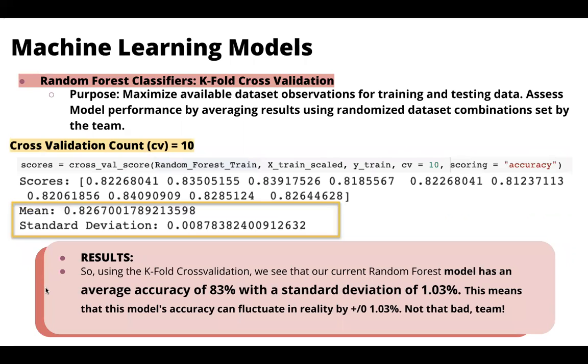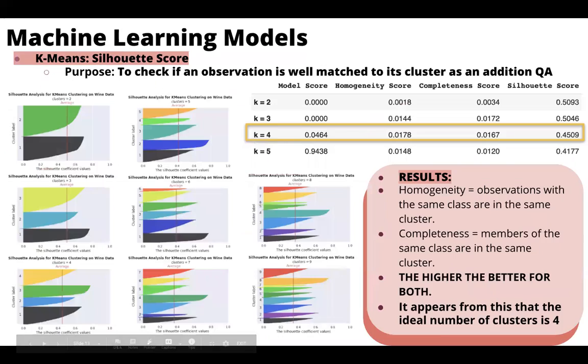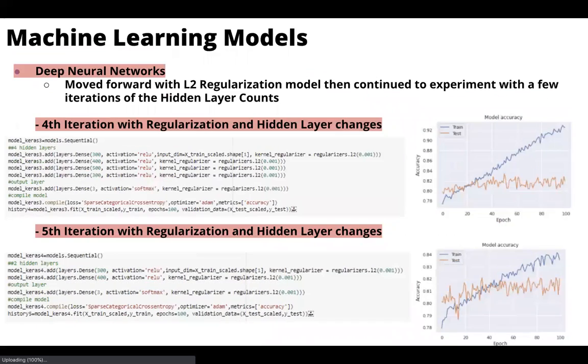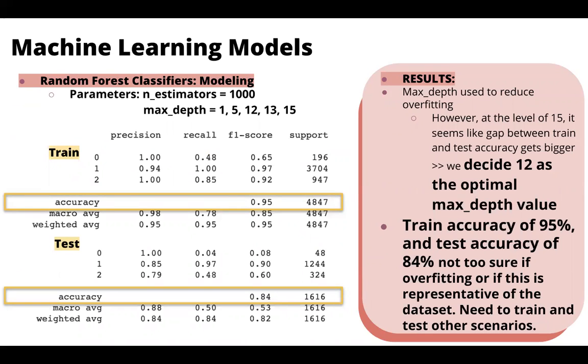Thanks Jamie. So the next model that we did was the random forest classifiers, where we first set up the parameters for a thousand estimators and played around with the max depth of the trees at 1, 5, 12, 13, and 15. We found that at 12, it was the most optimal max depth value. And that turned out for us an accuracy of 95% for train and 84% for our test. But we felt that we still needed to test other scenarios.